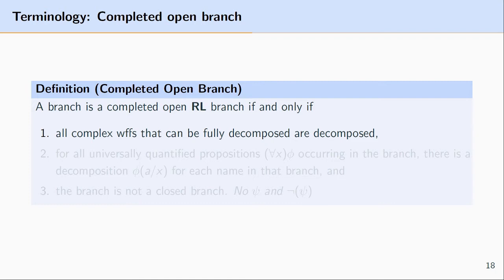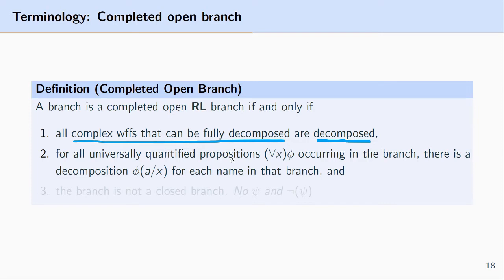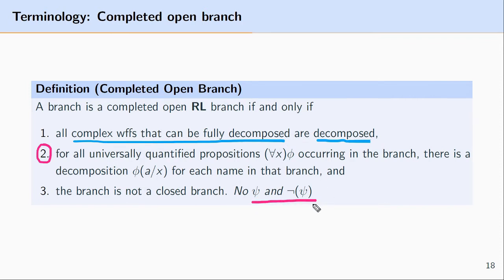The first condition is similar to propositional logic: a branch is a completed open branch if and only if all the complex well-formed formulas that can be fully decomposed are decomposed. The second condition states that for all universally quantified formulas that occur in the branch, there is a decomposition for each name that occurs in the branch. The third condition is that the branch does not contain a formula and its literal negation — so you don't have something like P and not-P, or not-Pb and Pb in the branch.